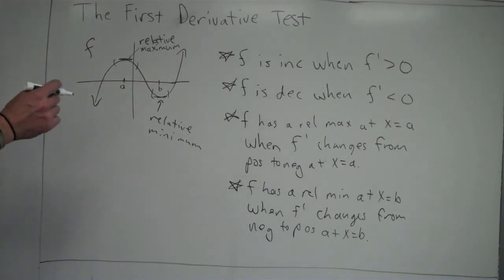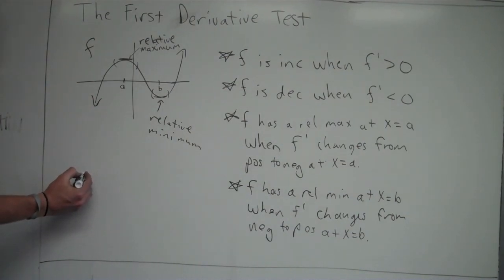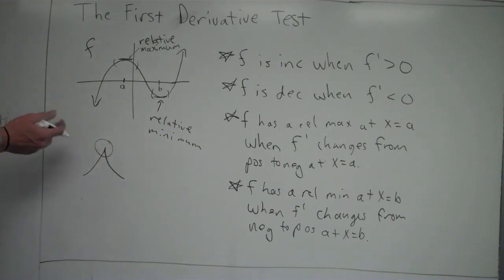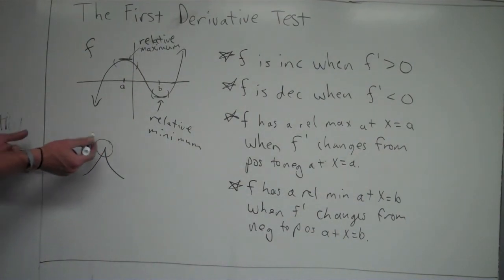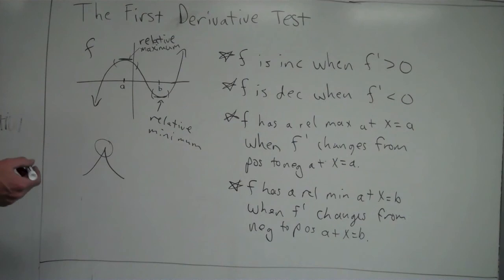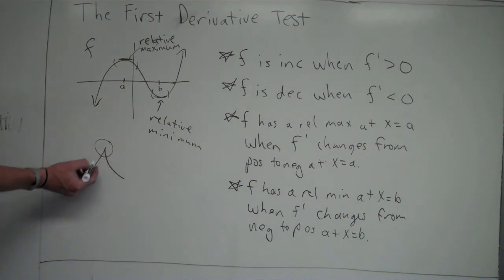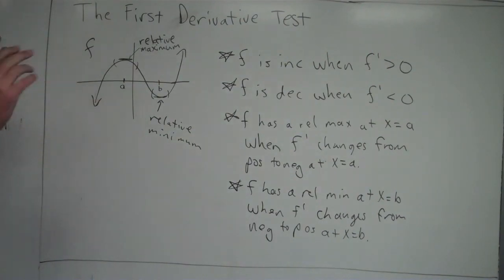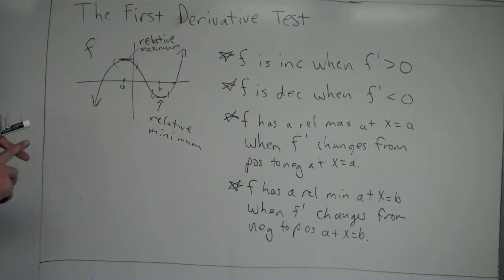There are also cases where the slope isn't zero at a relative extremum. For instance, if the graph has a sharp point or corner, the derivative would not be defined at that point — yet it can still be a relative maximum, since f is increasing to the left and decreasing to the right. So when looking for relative extrema, you need to check where the derivative is equal to zero or where the derivative is undefined.